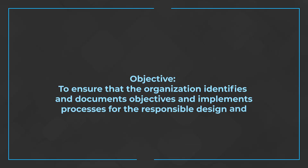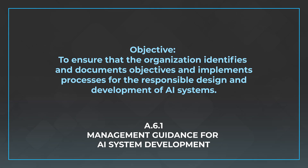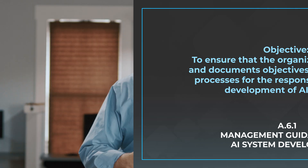The first is A.6.1, which is management guidance for AI system development, to ensure that the organization identifies and documents objectives and implements processes for the responsible design and development of AI systems. In short, this section of the Annex A controls wants to ensure that management is giving comprehensive guidance for the use and development of AI systems.